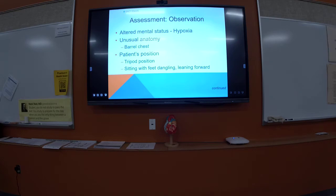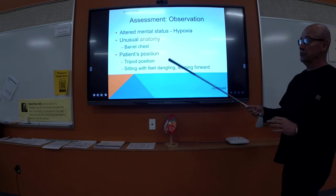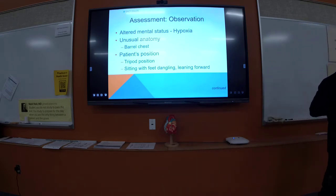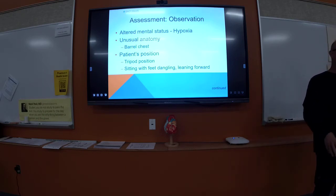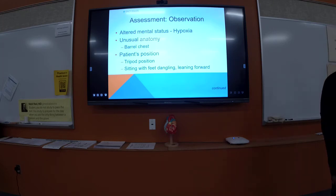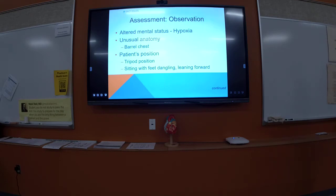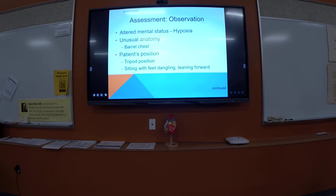Observation: do they have an altered mental status? Are they alert and oriented to person, place, time, and event? Because of hypoxia, altered mental status is common. Emphysema patients have an unusual anatomy — a skinny, barrel-chested appearance. Chronic bronchitis patients tend to be overweight and have a sweaty, grayish look. You can start picking out patients with different types of COPD based on how they look.